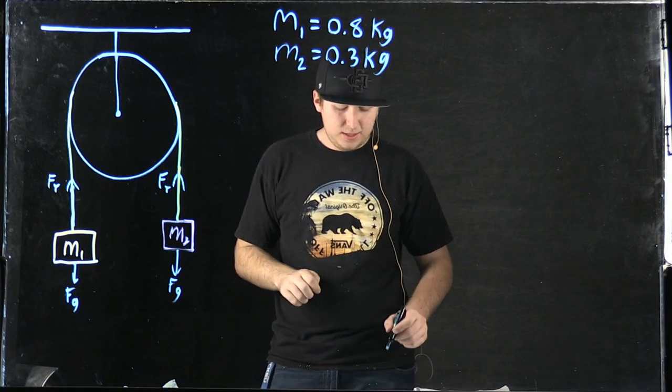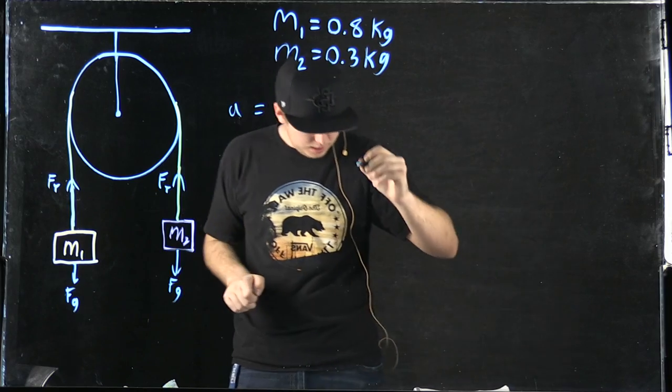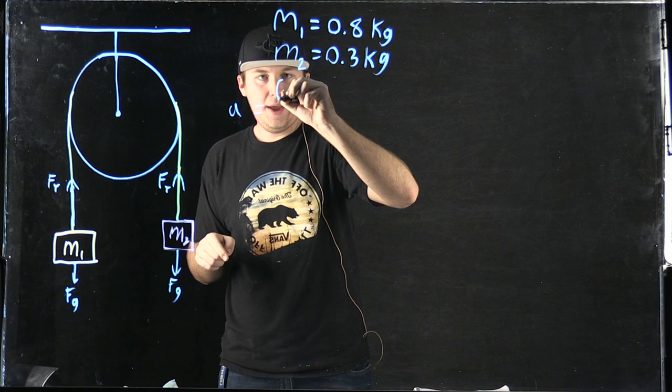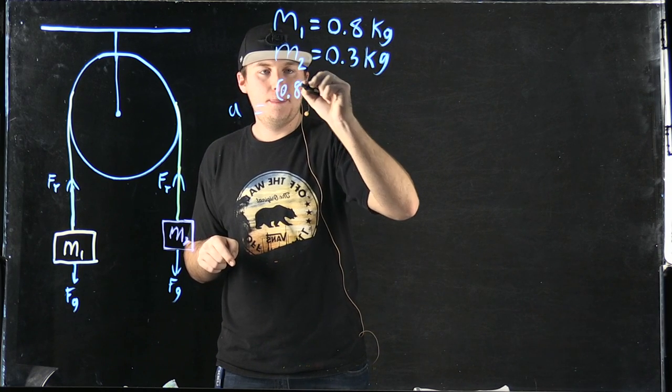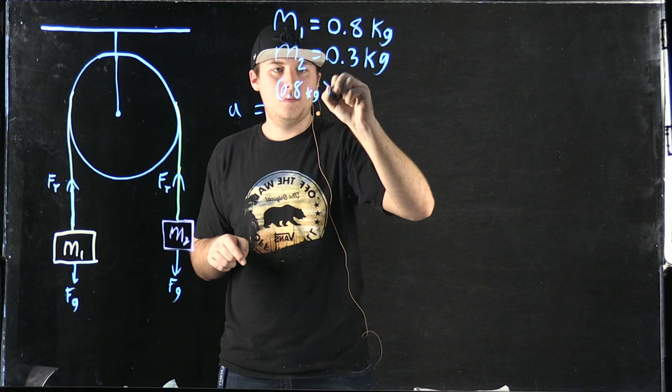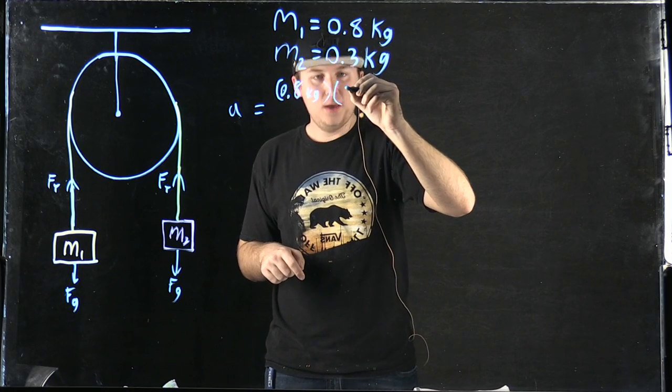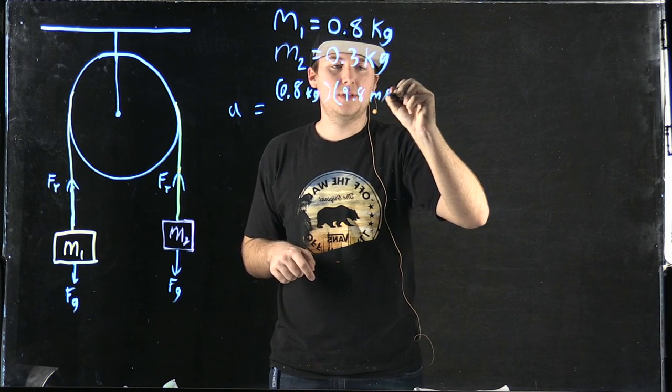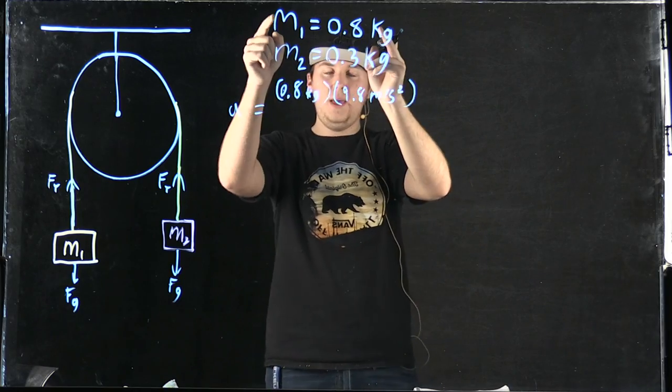We have to set the problem so that it is equal to both of them. So we have the mass of object 1, and we times that by the acceleration due to gravity, which is 9.8 meters per second squared. This is for M1,